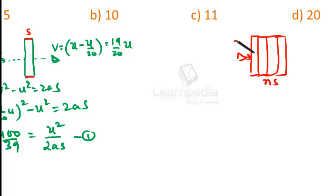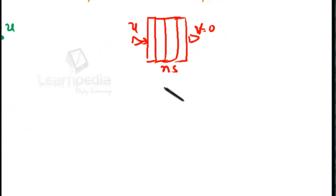Now the bullet enters with velocity u and at this point its velocity will be equal to v = 0. So the number of planks is n. We can also use the relation v² - u² = 0.